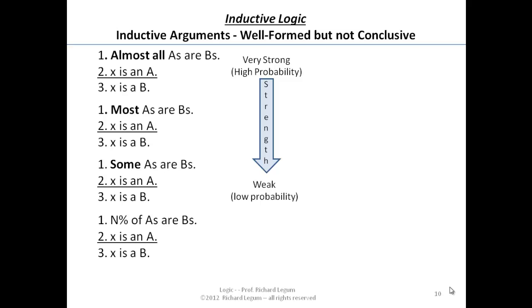Now if you think about it, all these are of the form where the quantifiers mean something like N percent of A's are B's, X is an A, therefore X is a B. So it works this way. If you look at the top one, I'm picking numbers out at random, but should fall into almost all.